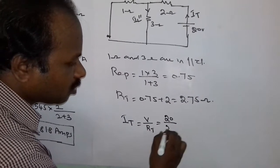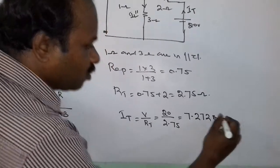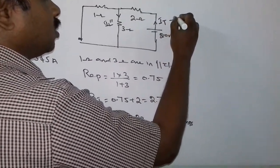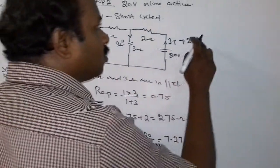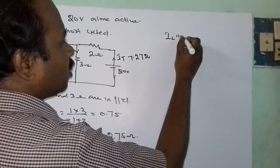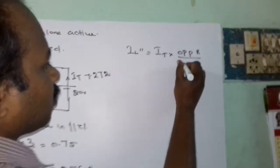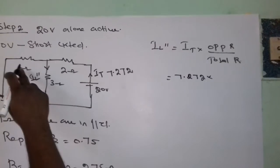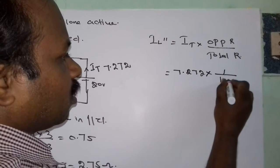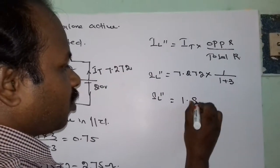The voltage source is 20V and the total resistance is 2.75 ohm, which gives 7.272 amps. By using the current division rule, we find IL double dash. IL double dash equals ITotal multiplied by the opposite resistance divided by total resistance. The total current is 7.272, and the opposite resistance to the 3 ohm is 1 ohm. So IL double dash equals 7.272 × 1 divided by (1 + 3), giving IL double dash equal to 1.818 amps.